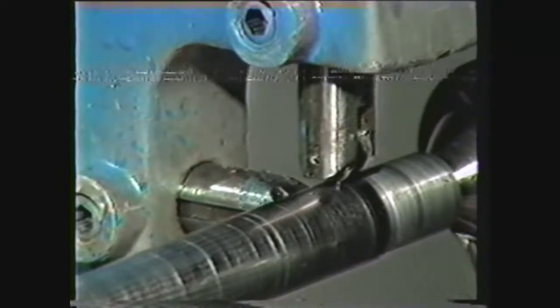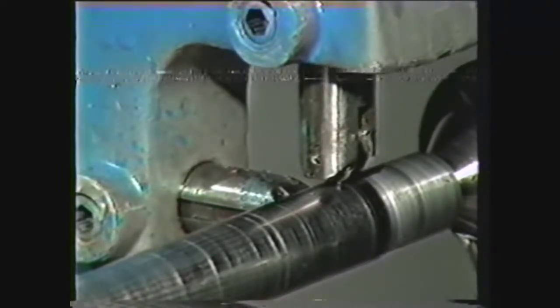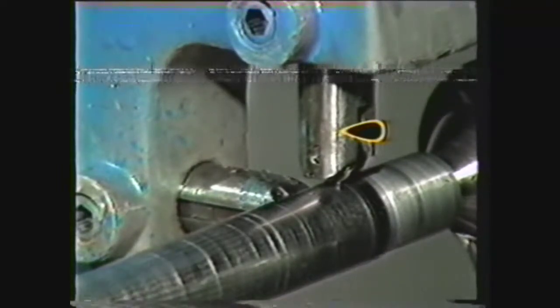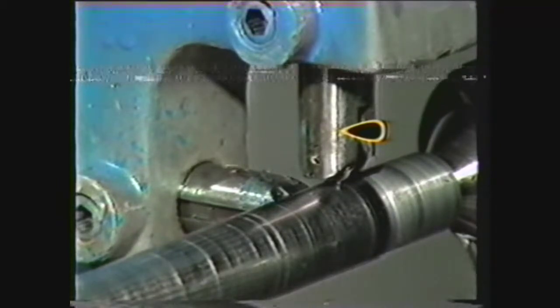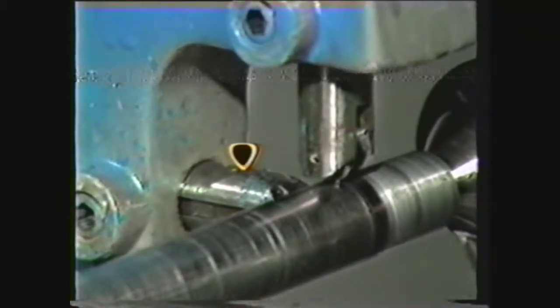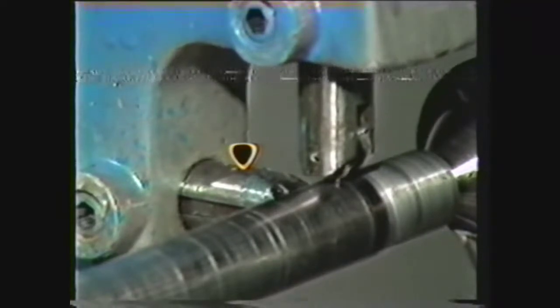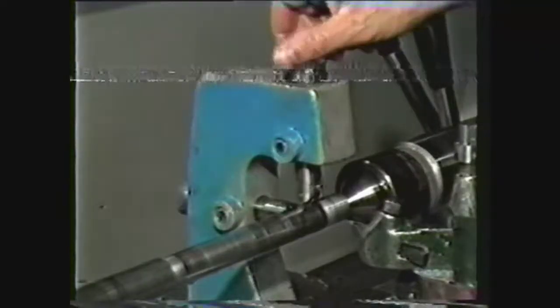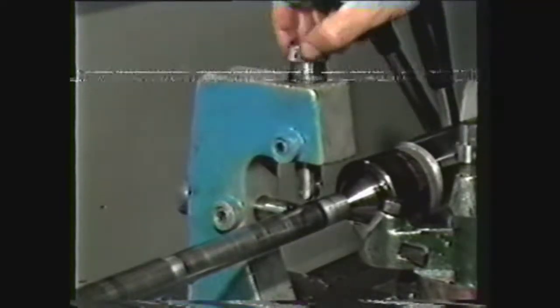Follower rests have two adjustable supporting jaws: one above the work to prevent the tendency to climb on the tool, and the other behind the work to counter the horizontal thrust of the tool. Each jaw has an adjusting screw and locking screw.